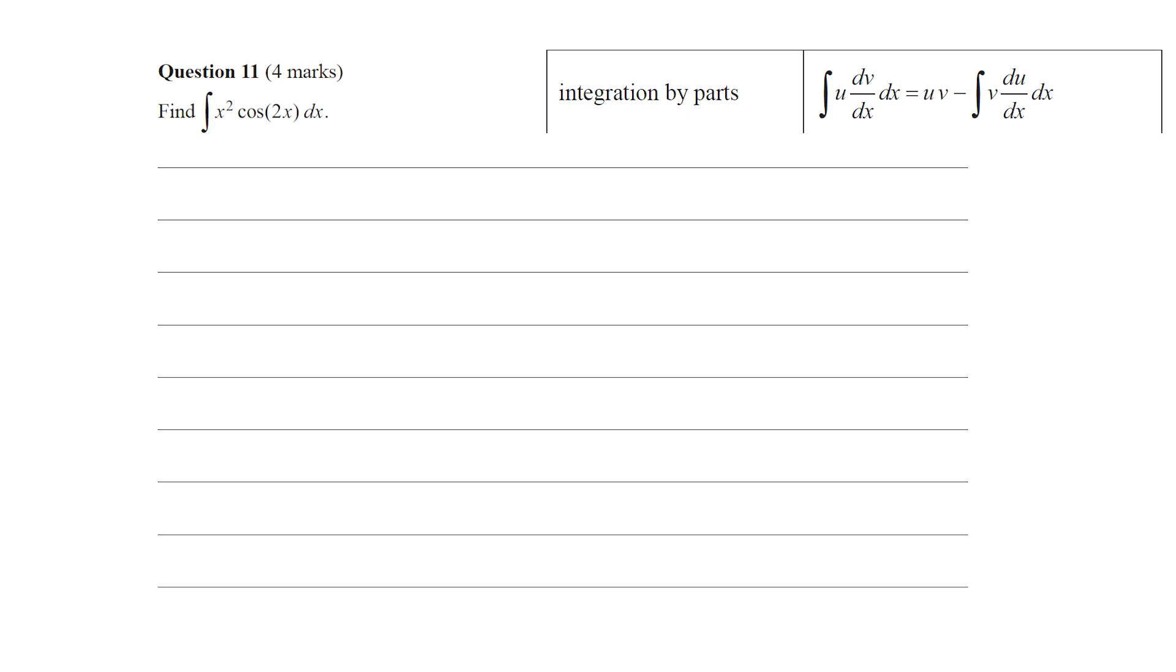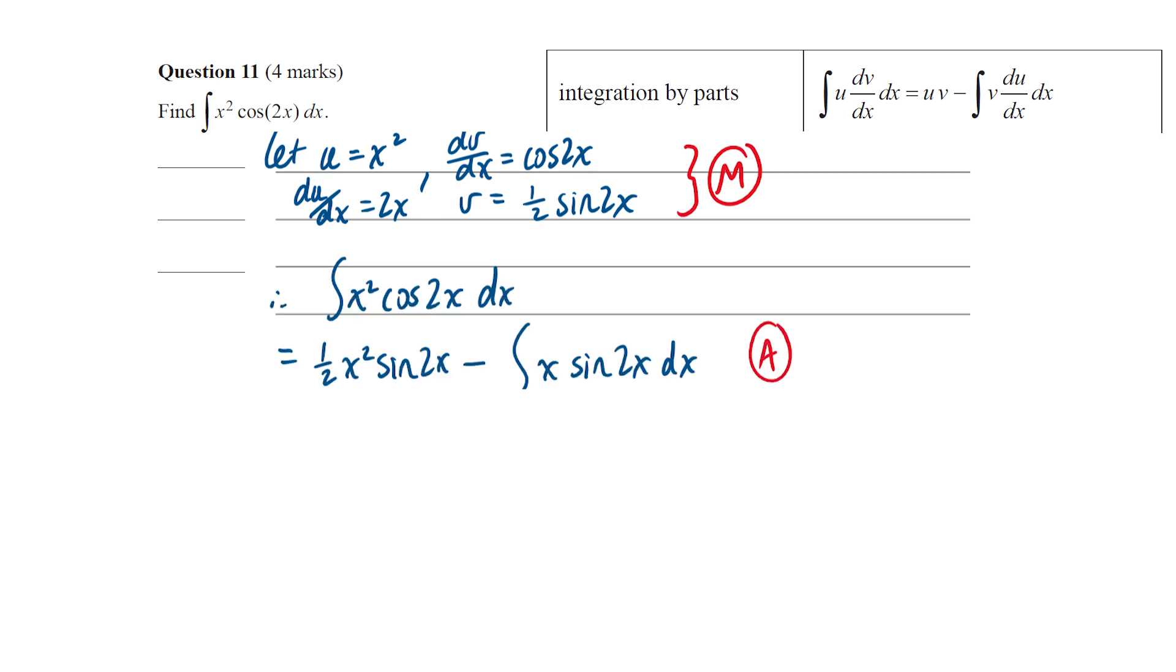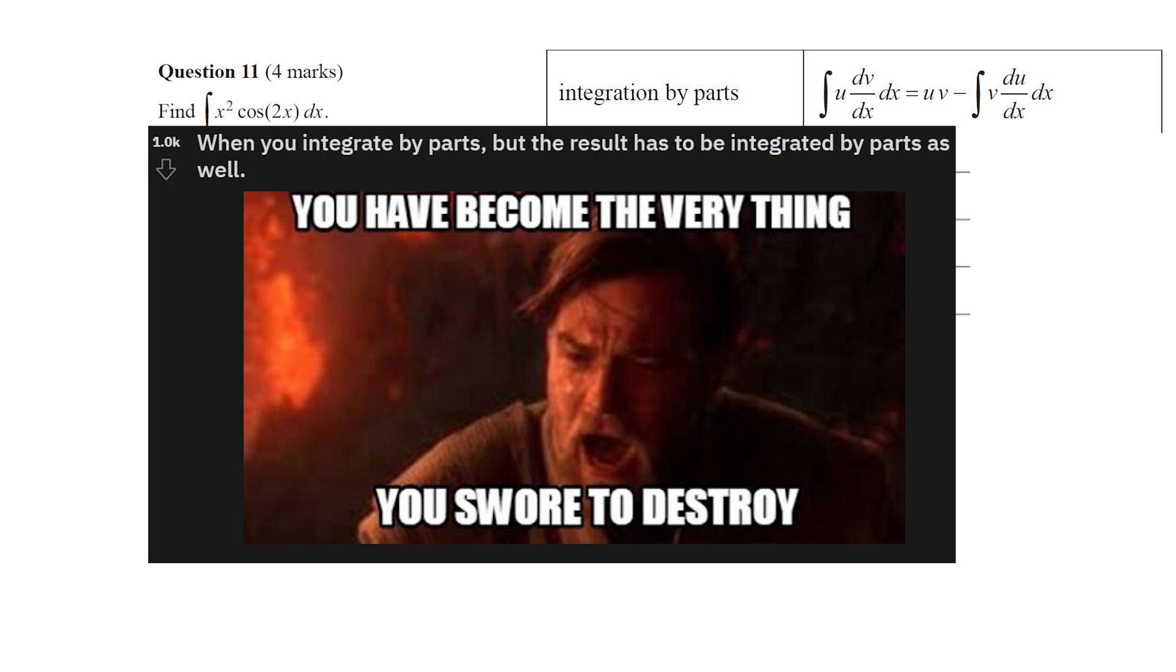Then we find du/dx to be 2x and v to be the integral of dv/dx—that's half sine 2x. Now we apply our formula and this integral is going to become uv minus integral of v du/dx. Then look at that second integral—we can't do it directly, but again, we can do integration by parts again. There's a funny meme which I saw, which I thought someone else might appreciate.